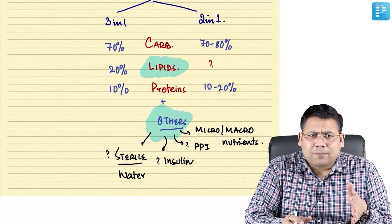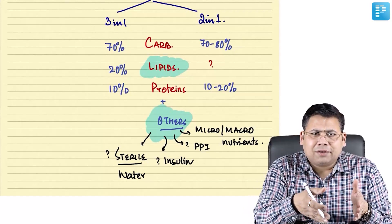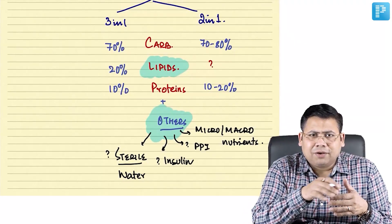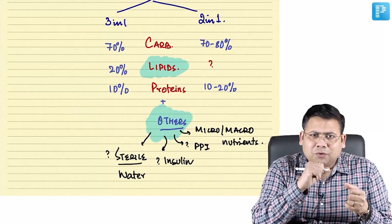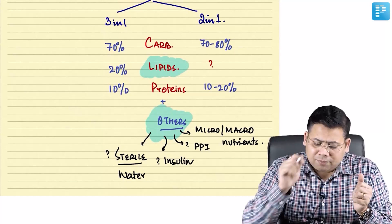Same company Baxter, same company Krabivan, same company Aculife, they are manufacturing 3-in-1 also and 2-in-1 also. This is very important.